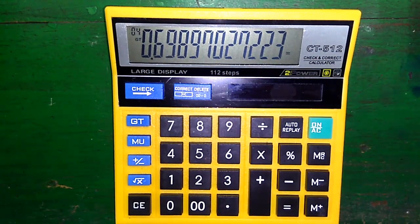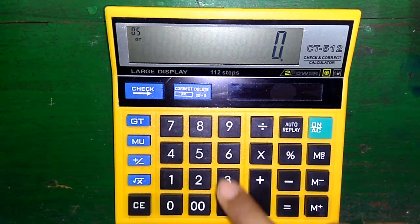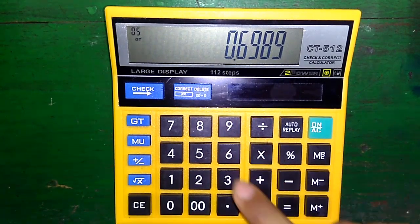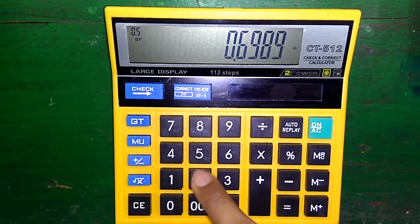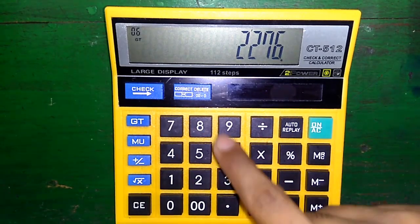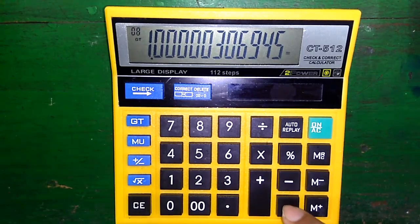Now to find antilog of 0.6989, enter 0.6989, divide by a special number 227695, plus 1, equals to.